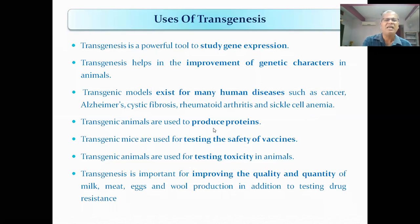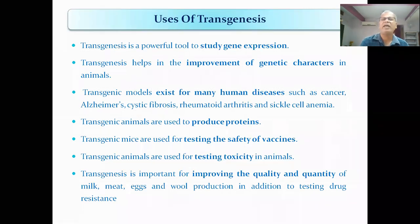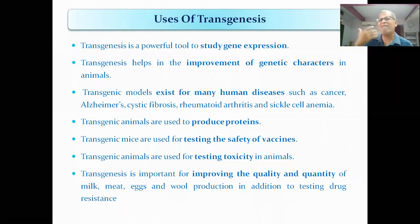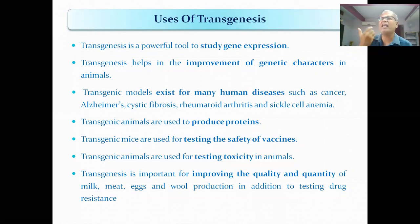Transgenic animals are used to produce proteins — tevayana puradangalai uruvakalaam. Interferons, interleukins, venom inhibitors, insulin, human growth hormone — namakke tevayana anaitu puradangalai um in the vilengi halin naamal uruvakamudiyum.